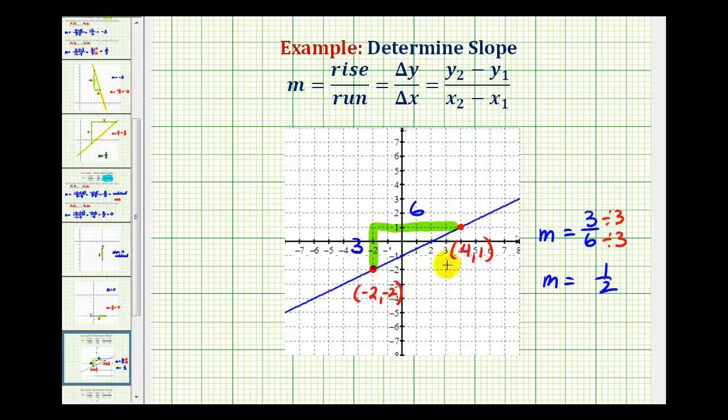Or if we wanted to, given these two points, we could use the slope formula, which is the difference in the y coordinates over the difference in the x coordinates. Let's show that as well. So we'll call these the ones. This will be x sub one, y sub one. And we'll call these the twos. This will be x sub two and y sub two.